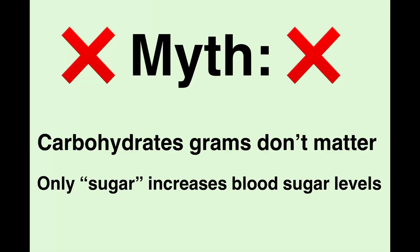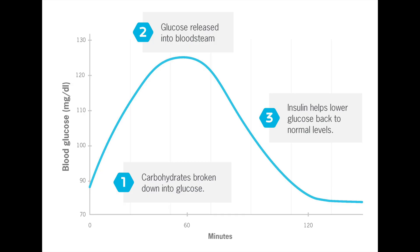The myth is that carbohydrate grams don't matter and that sugar grams are the only thing that increases blood sugars — but that is false, because both sugar grams and carbohydrates have a direct impact on your blood sugars. The foods we eat break down and digest, and much of what we eat breaks down into glucose — with the exception of proteins like meat, poultry, and fish, and non-starchy vegetables.